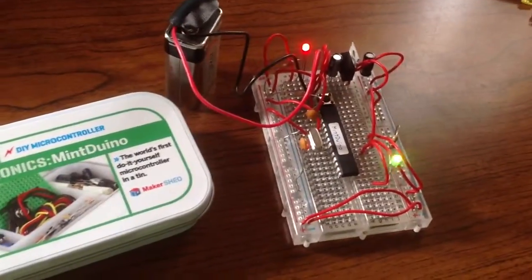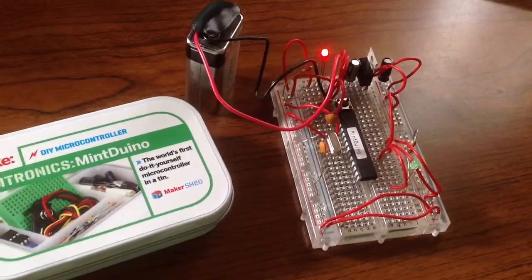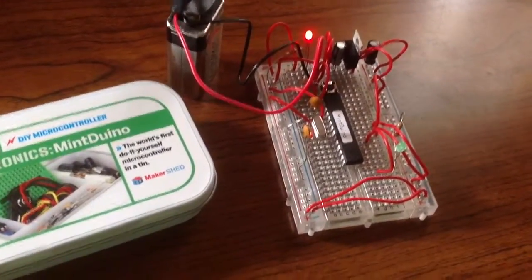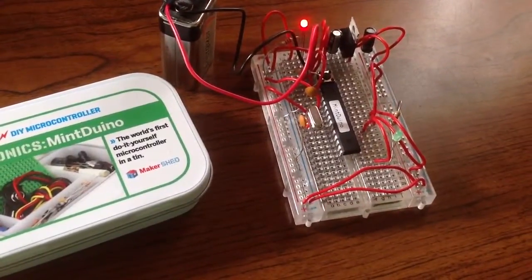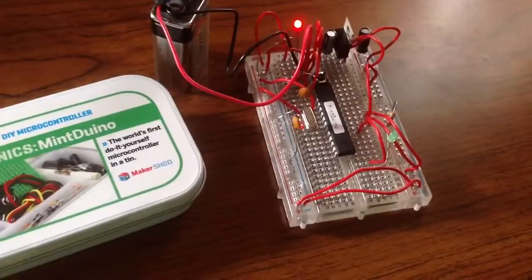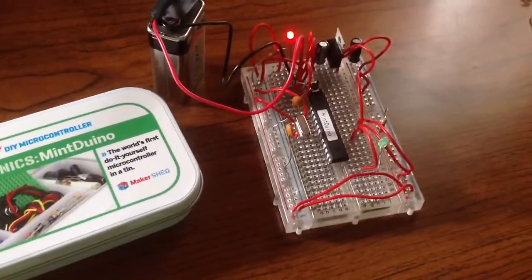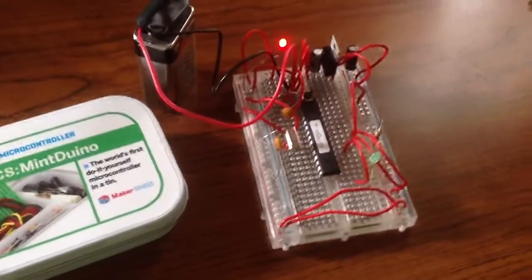Another thing that they don't exactly warn you about is in order to program this you need to go out and purchase an FTDI cable which is not included, but it doesn't tell you what is or isn't included. You would have to end up figuring that out after purchase.